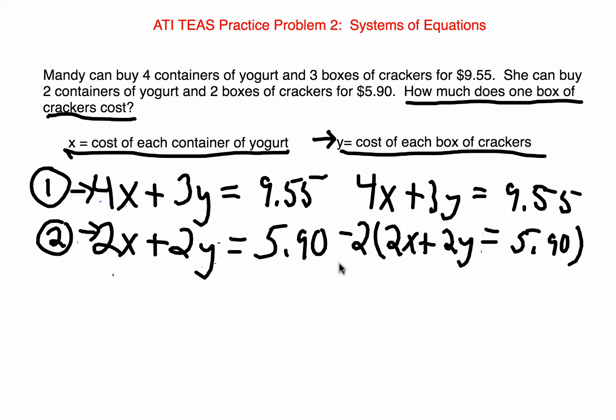When we multiply equation 2 by negative 2, what is going to happen is everything here is going to be affected by the negative 2. You are going to distribute that negative 2 to all of the terms in the equation. So, when I rewrite my system, I will have this.